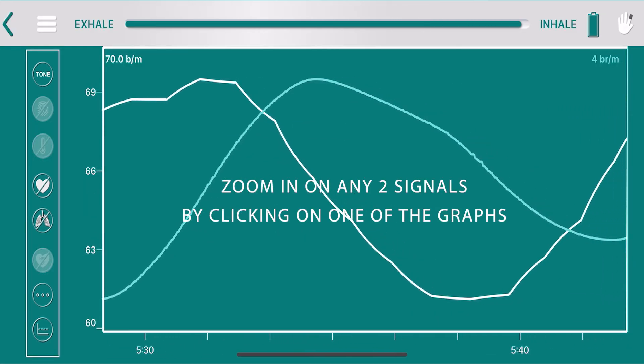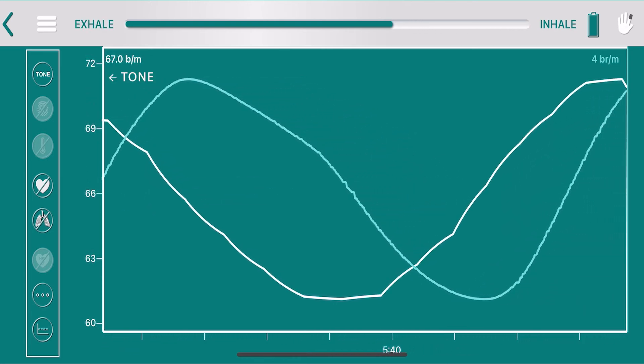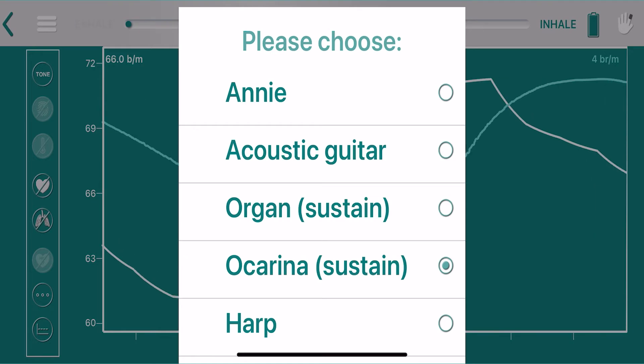Or zoom in on any two signals by clicking on one of the graphs, and choose from a wide variety of amplitude proportional MIDI tones or music volume from the tone button menu.